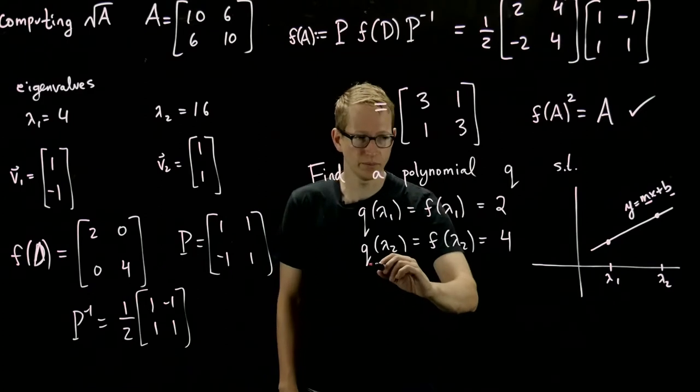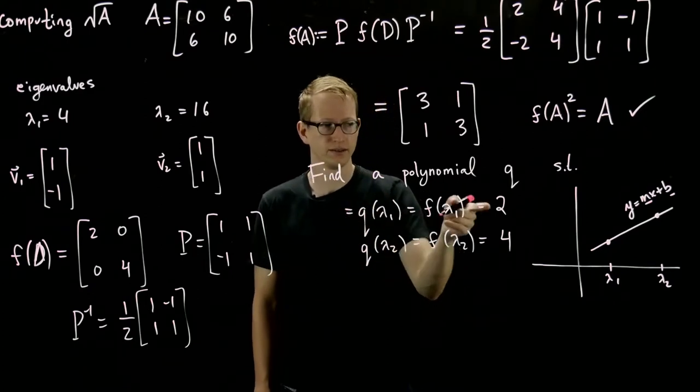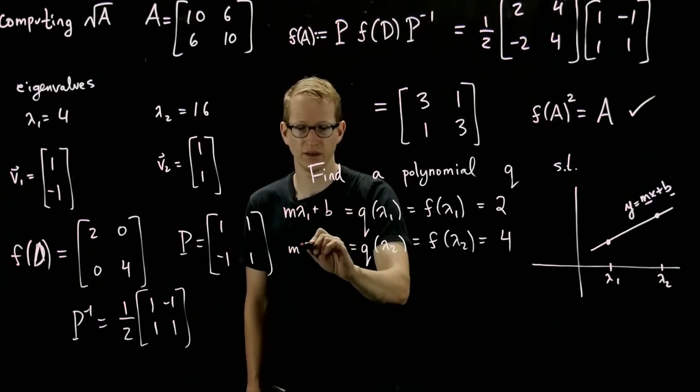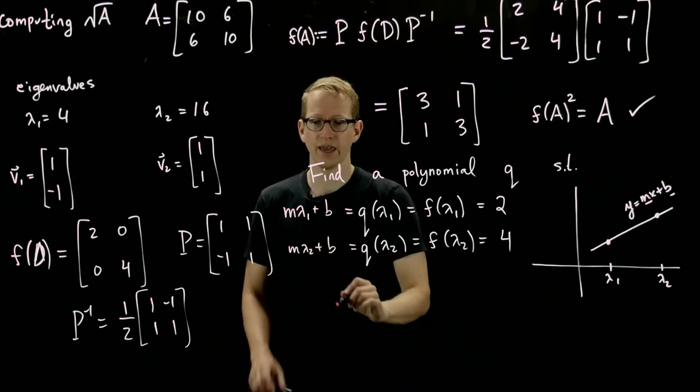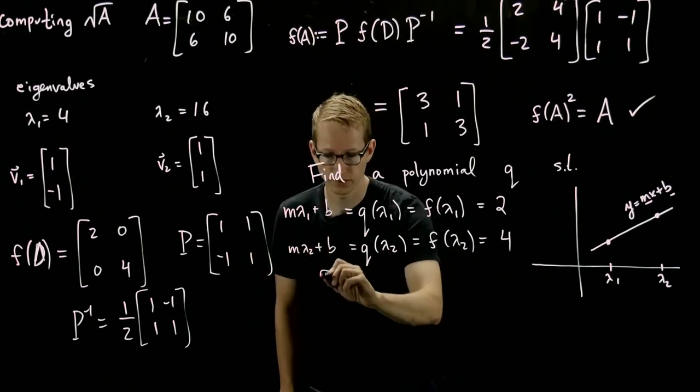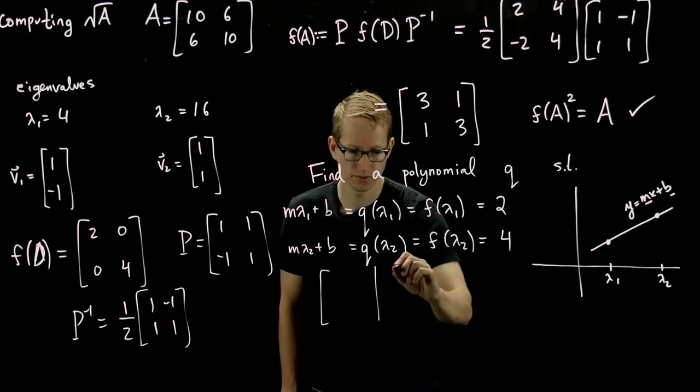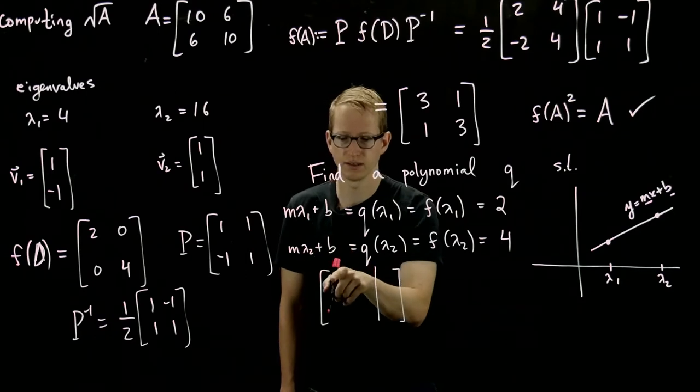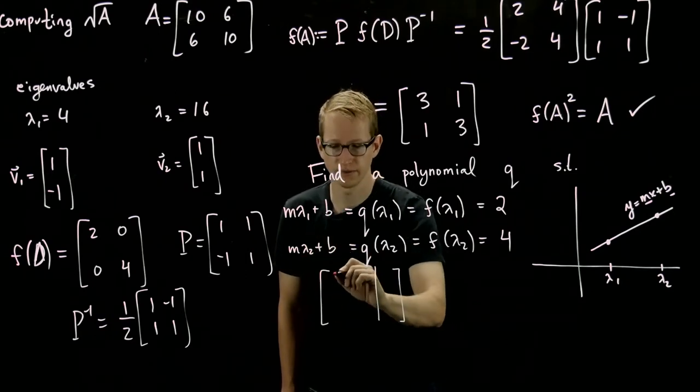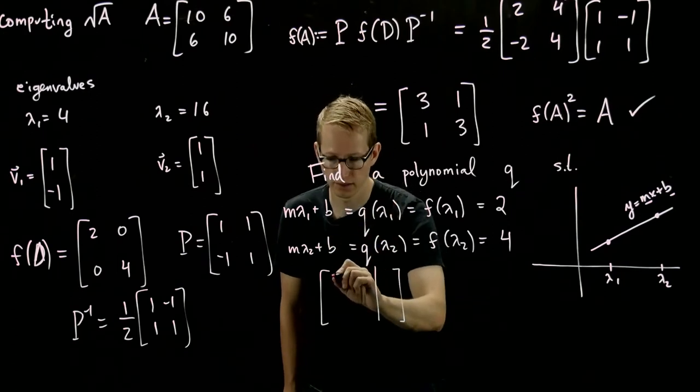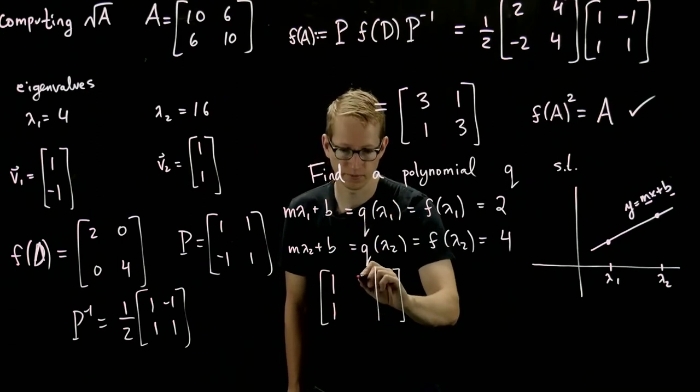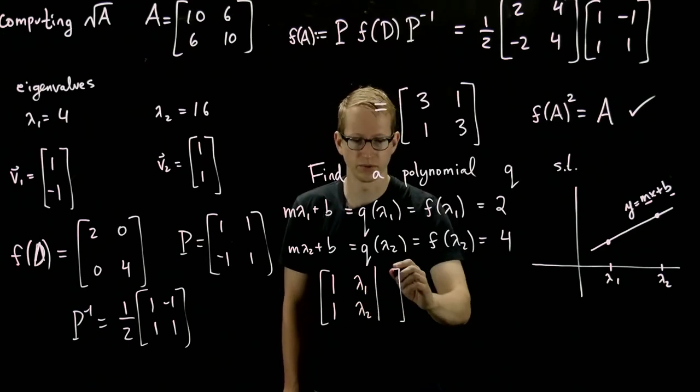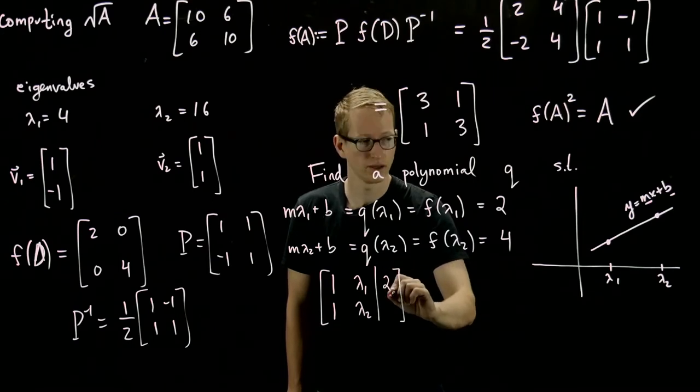So when we set this up, we write on this side, since this is our y, we have m lambda 1 plus b, and this equals m of lambda 2 plus b. And our unknowns are m and b. So if we set up our matrix system, we get, and what I'll do for convenience is I'll put the 1s on the left. So I'll put my bs on the left column. So it's really b plus mx. 1, 1, and then this is lambda 1, lambda 2, and our two corresponding values, f of lambda 1, which in this case is 2, and 4.